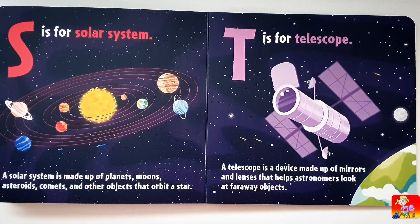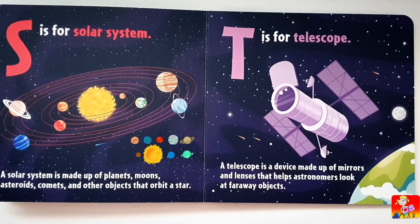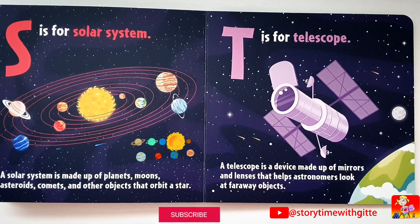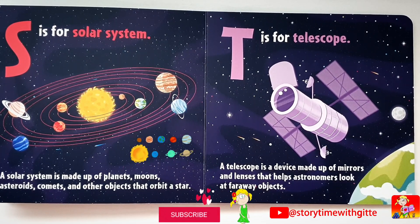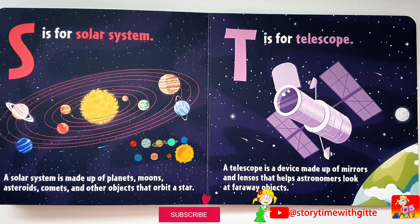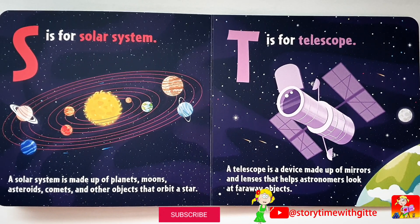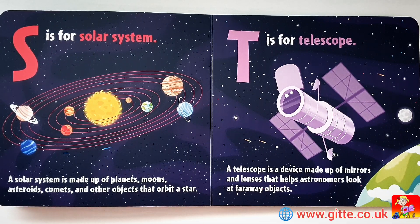S is for Solar System. A solar system is made up of planets, moons, asteroids, comets and other objects that orbit a star. T is for Telescope. A telescope is a device made up of mirrors and lenses that helps astronomers look at far away objects.